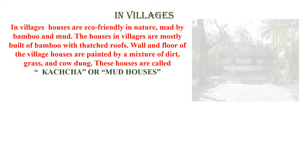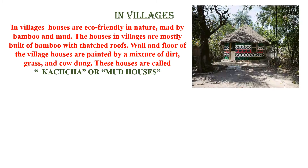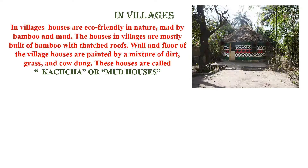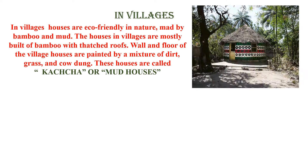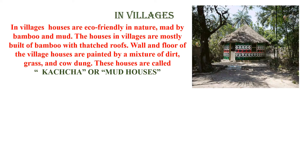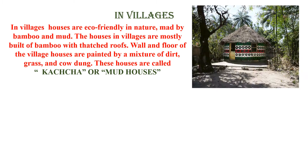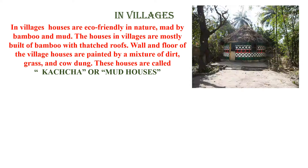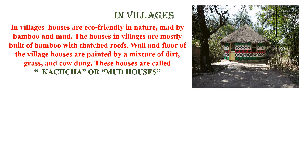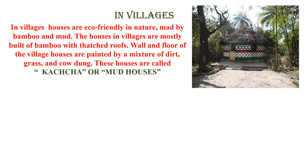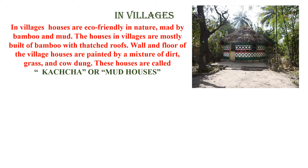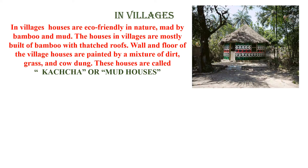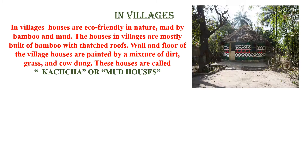Let us focus on villages. In villages, houses are eco-friendly in nature, made by bamboo and mud. The houses in villages are mostly built of bamboo with thatched roofs. The wall and floor of village houses are painted with a mixture of dirt, grass and cow dung. These houses are called kacha or mud houses.